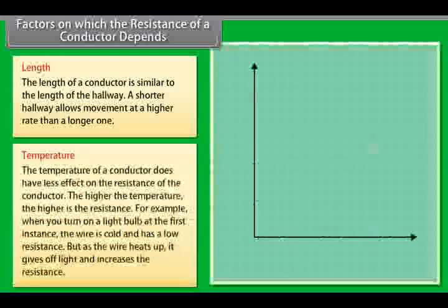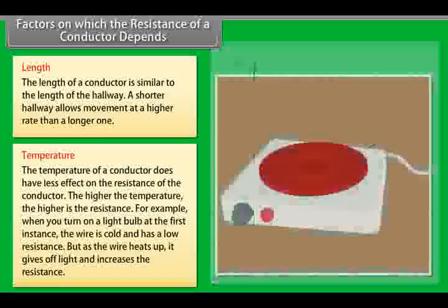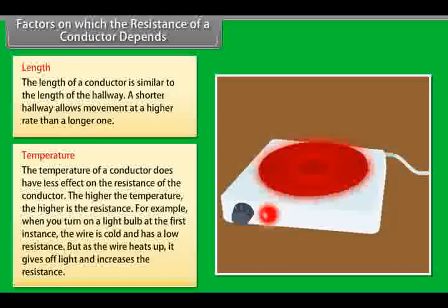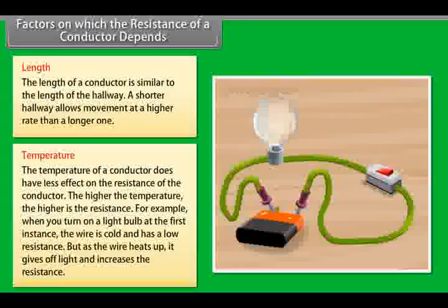Temperature. The temperature of a conductor does have an effect on the resistance of the conductor. The higher the temperature, the higher is the resistance. For example, when you turn on a light bulb at the first instance, the wire is cold and has a low resistance. But as the wire heats up, it gives off light and increases the resistance.